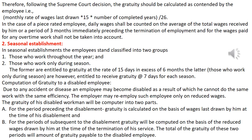The second type is the Seasonal Establishment. In a Seasonal Establishment, employees are classified into two types: those who work throughout the year and those who work only during the season. For those who work throughout the year, the rate of 15 days in excess of 6 months is calculated as per non-seasonal establishments. For those who work only during the season, they are entitled to Gratuity at the rate of 7 days for each season.